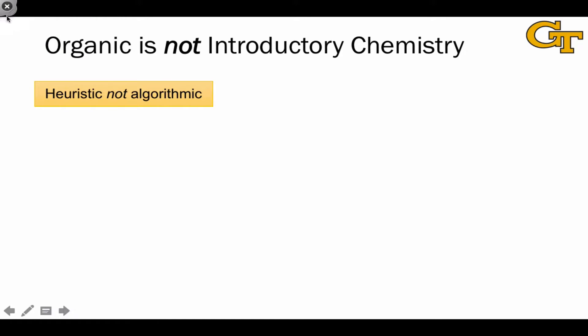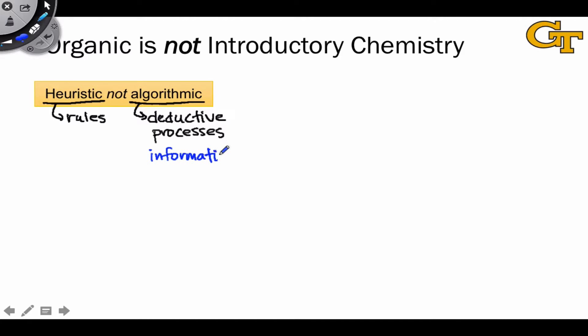The first is that organic chemistry is heuristic and not algorithmic, and by this I mean that organic chemistry deals with heuristics. A simpler word for heuristics is simply rules, whereas general chemistry, you can get by thinking in terms of algorithms, which are much more like deductive processes, meaning they take an input of information, and this is usually quantitative information in terms of a set of numbers, and you apply a series of steps to that information, and out comes an answer, and often that answer is also quantitative.